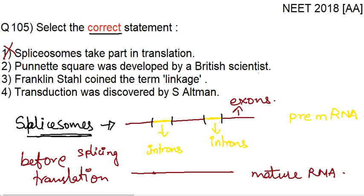The second statement: Punnett square was developed by a British scientist. The Punnett square is used to study the number of combinations possible. It was developed by scientist Punnett, who belongs to the UK. So this option is correct - Punnett square was developed by a British scientist.